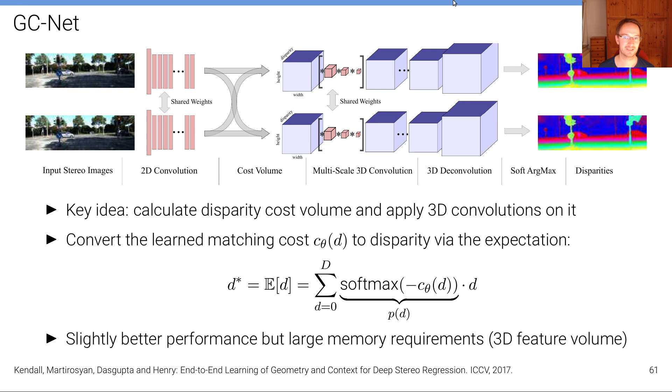And this leads to slightly better performance but has larger implications for the memory. It's very memory intensive so very small mini batch sizes could be used here because these 3D volumes are very memory intensive and these 3D convolutions are more memory intensive than 2D convolutions.